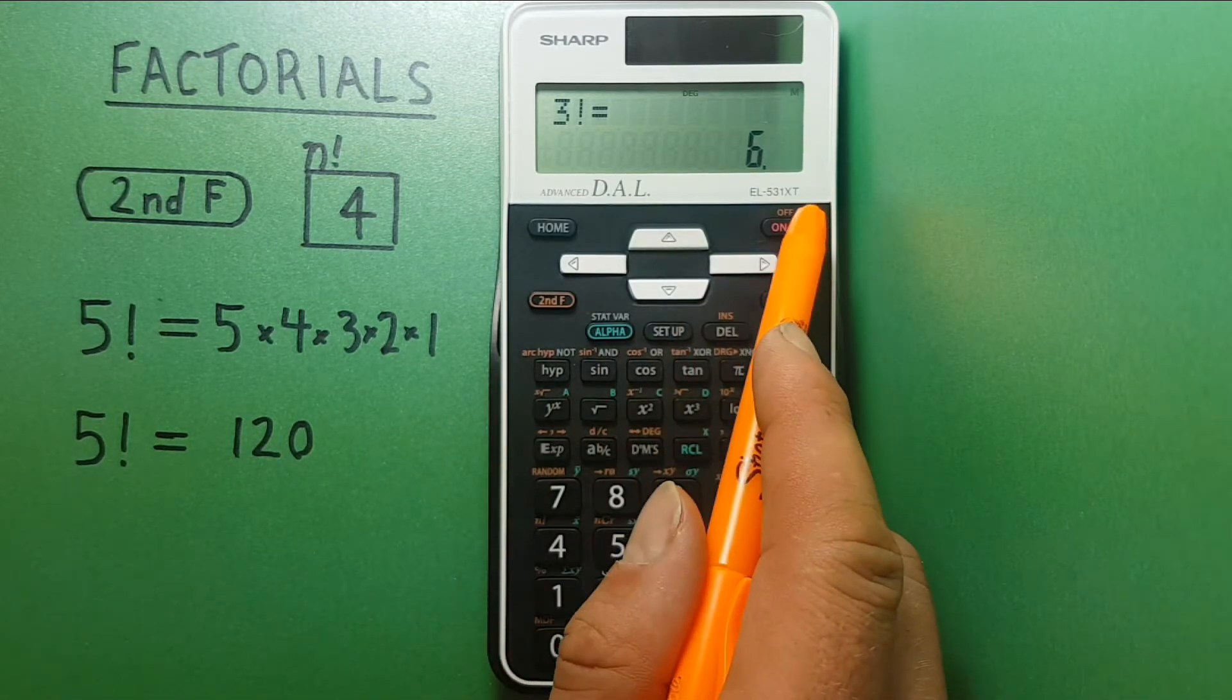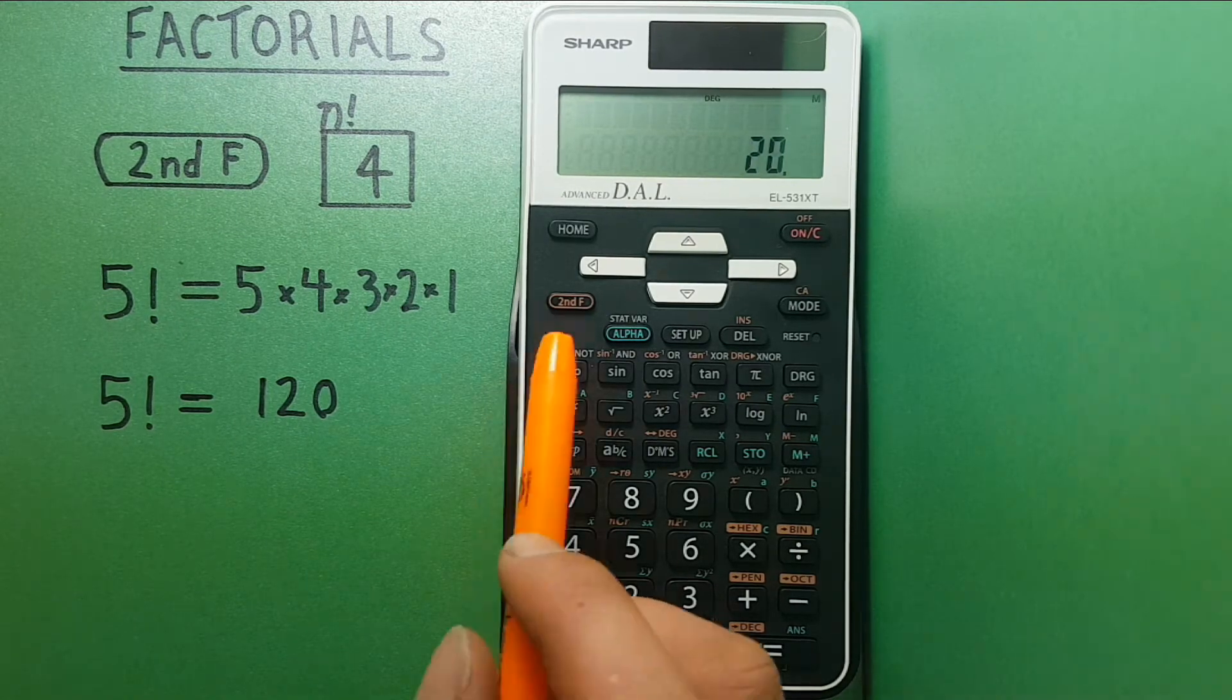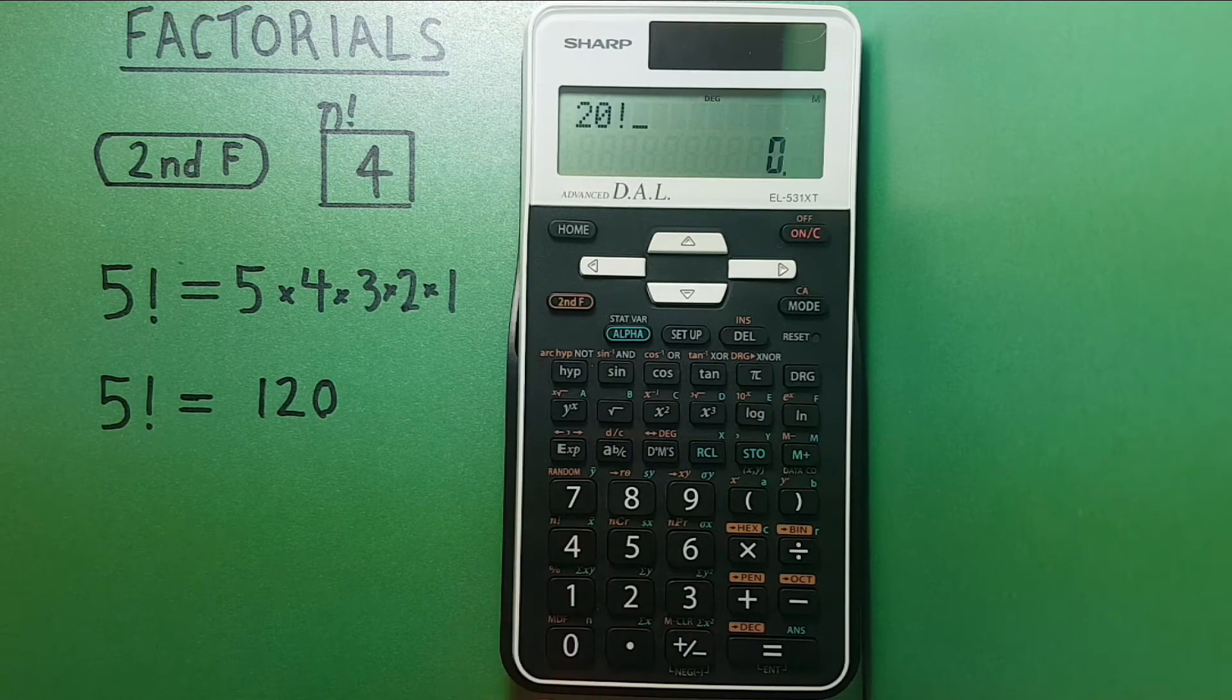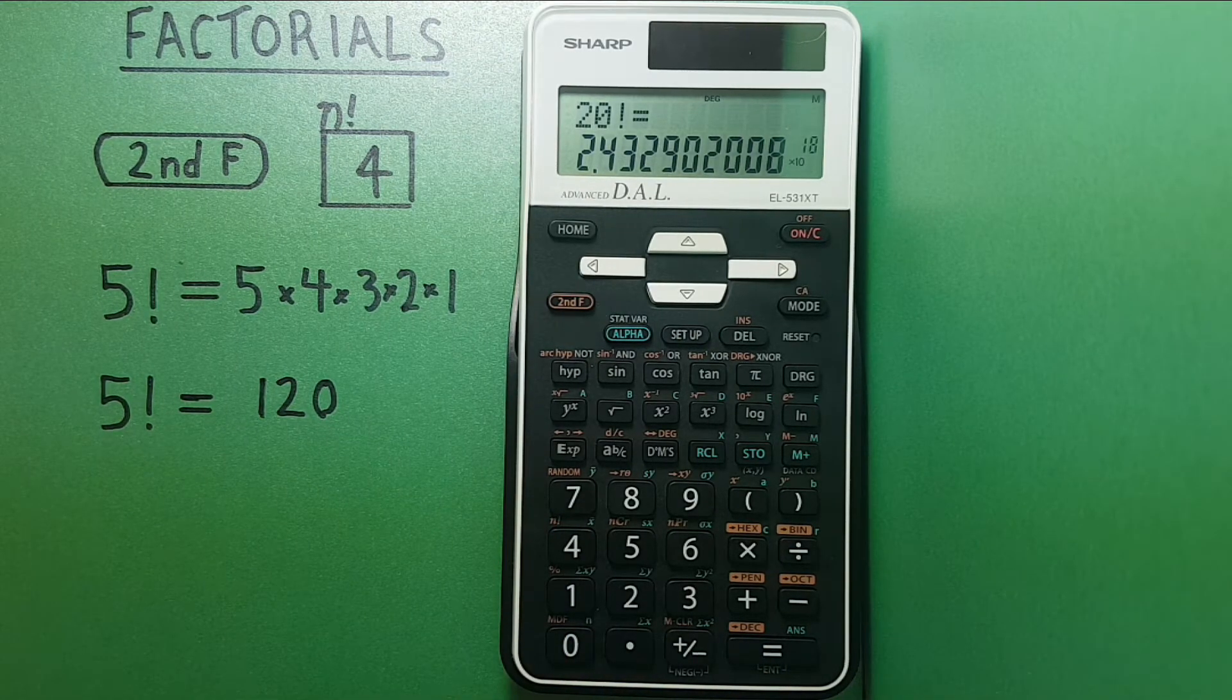Let's try a bigger number. Let's try 20. So 20 second function 4 equals. And you can see we get a massive number there.